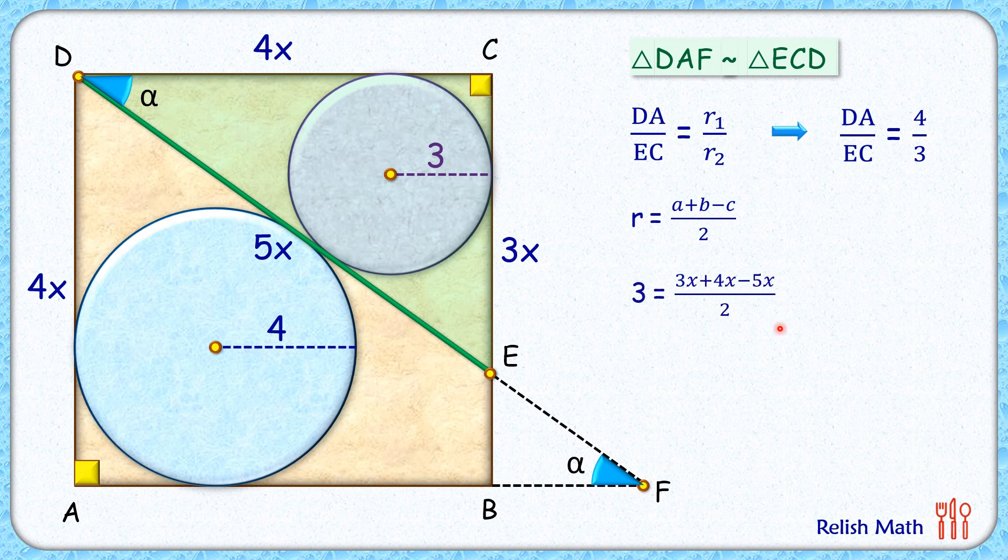So putting these values we get this equation. Solving it, RHS will become 2x upon 2 or x. So solving it we'll get x as 3.